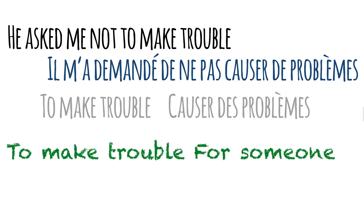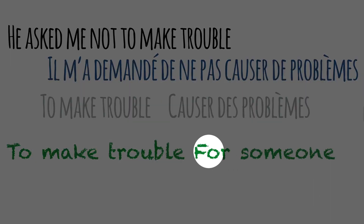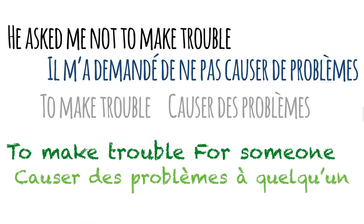To make trouble for someone — how to translate the preposition 'for'? In French, we use 'à': causer des problèmes à quelqu'un. Pierre cause des problèmes à Charlotte. Et c'est pas bien, c'est pas gentil du tout! So remember that 'to make trouble' is causer des problèmes — cela me cause des problèmes, il arrive toujours en retard.